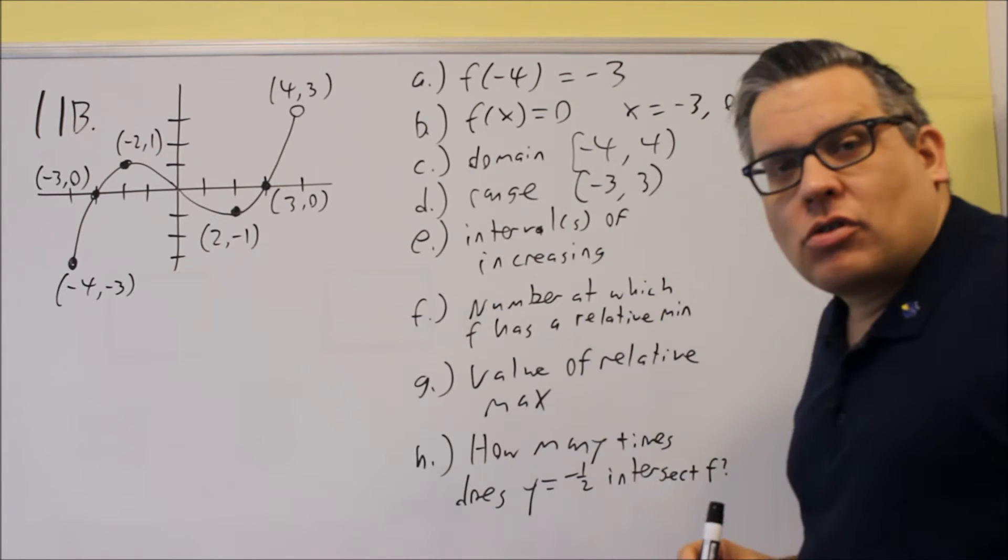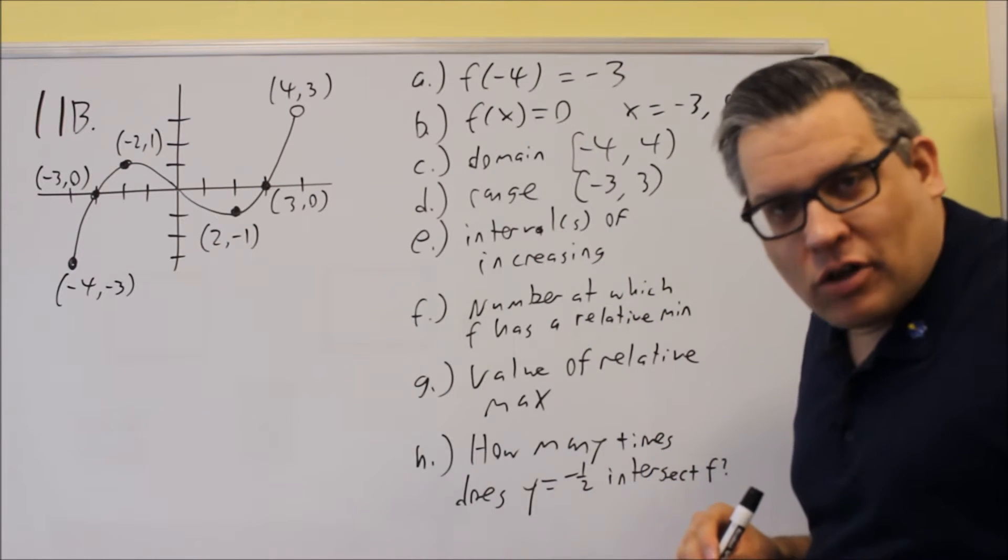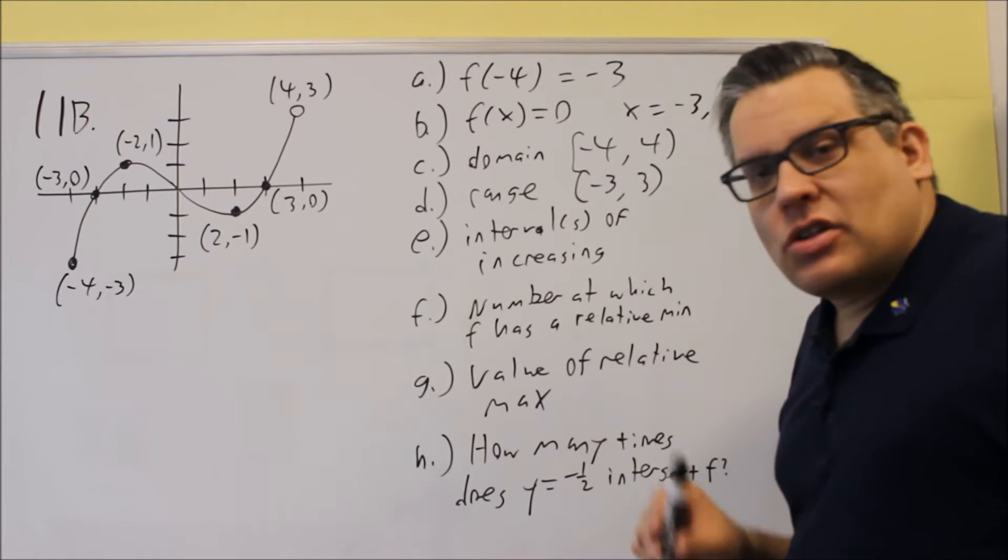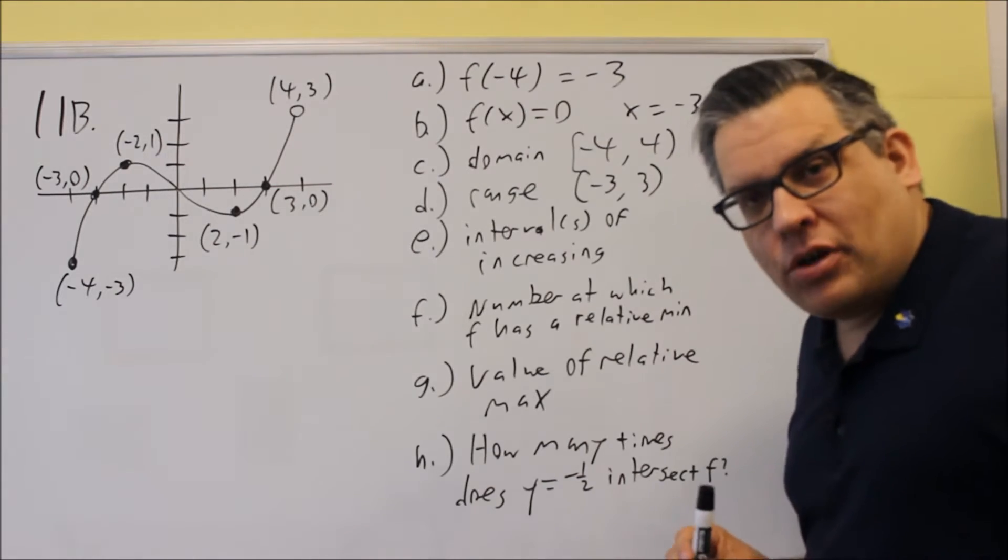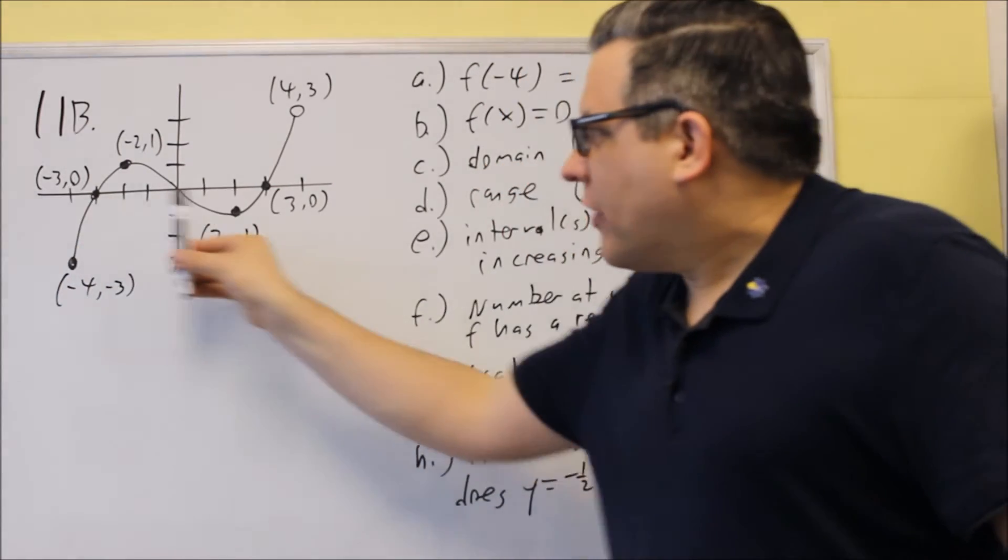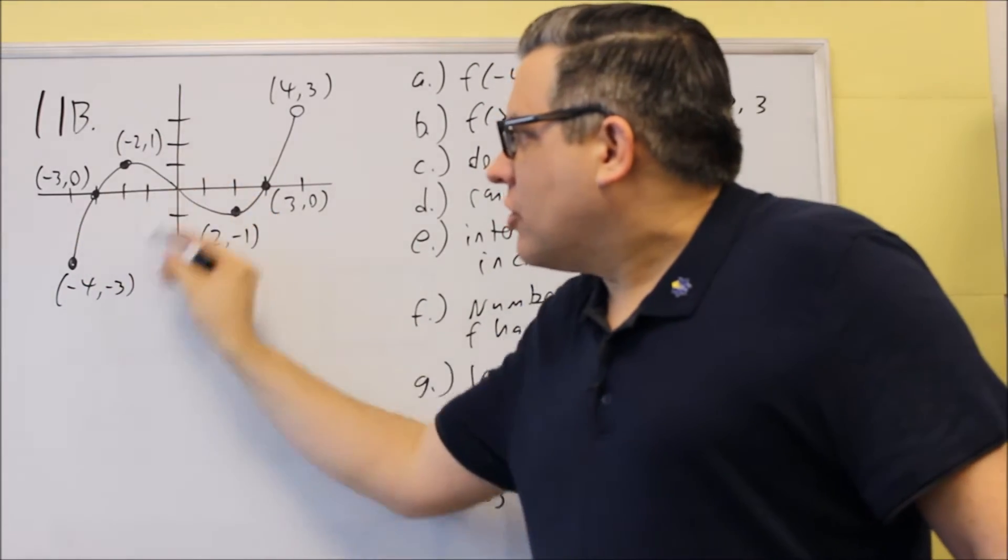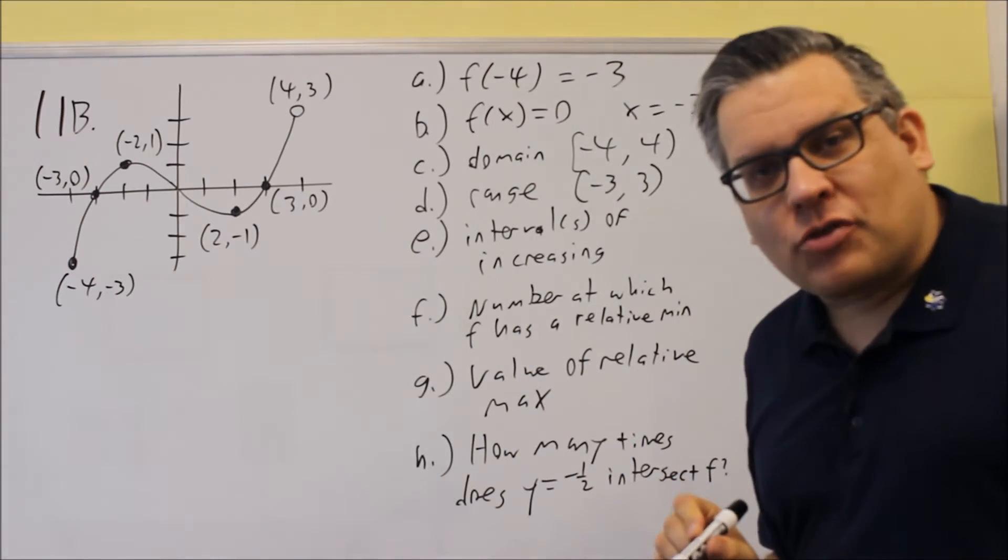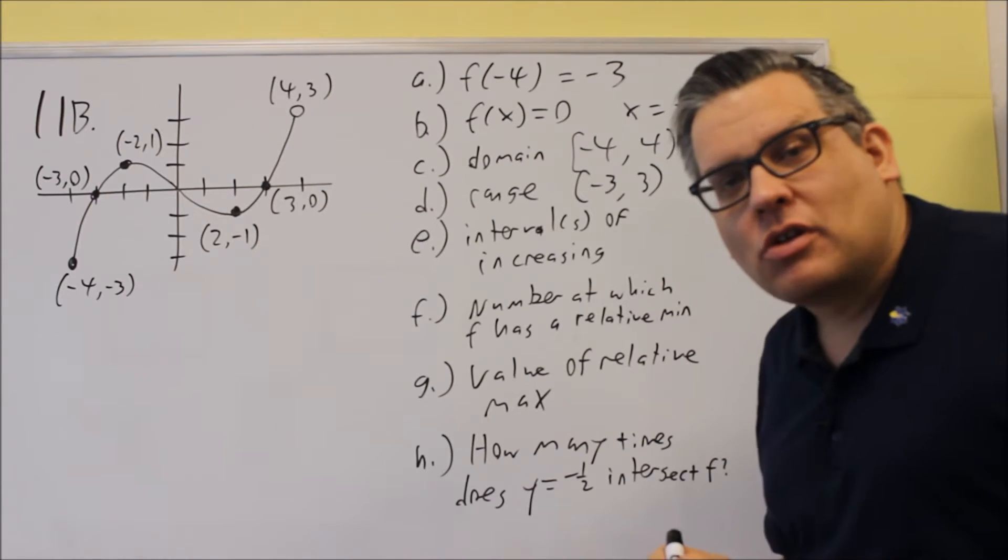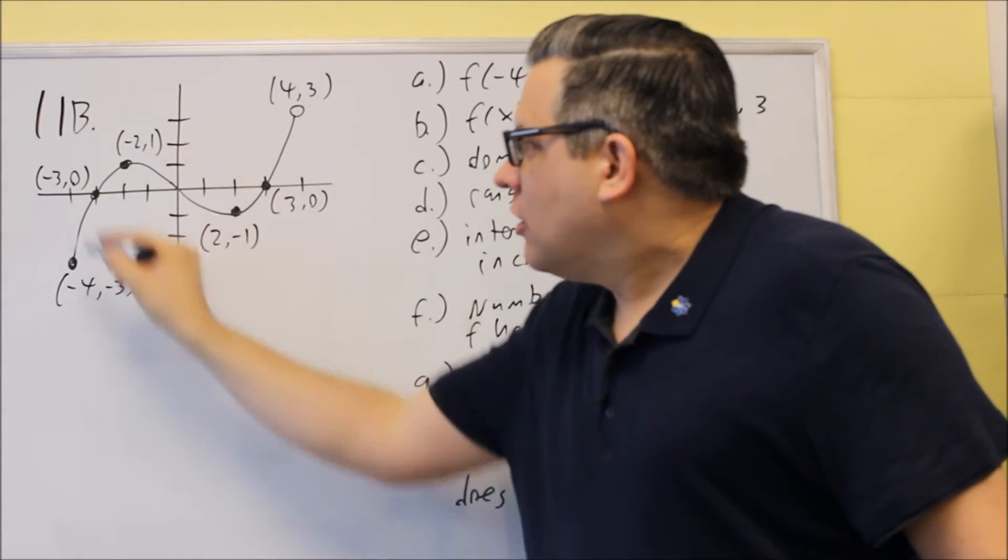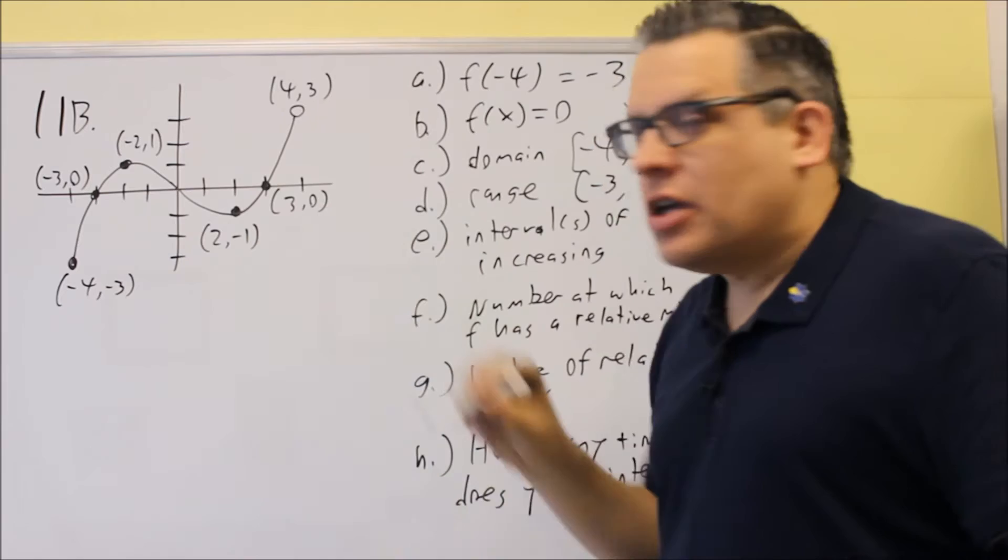For e, it says intervals of increasing. So increasing this time we're looking for, as we move from left to right, you're looking for the part of the graph that's going uphill. As we go from left to right, there's actually two places here where the graph is going uphill. So because there's two places, that means we're going to have two different intervals for our answer. We have one part here, and another one is going to be here.